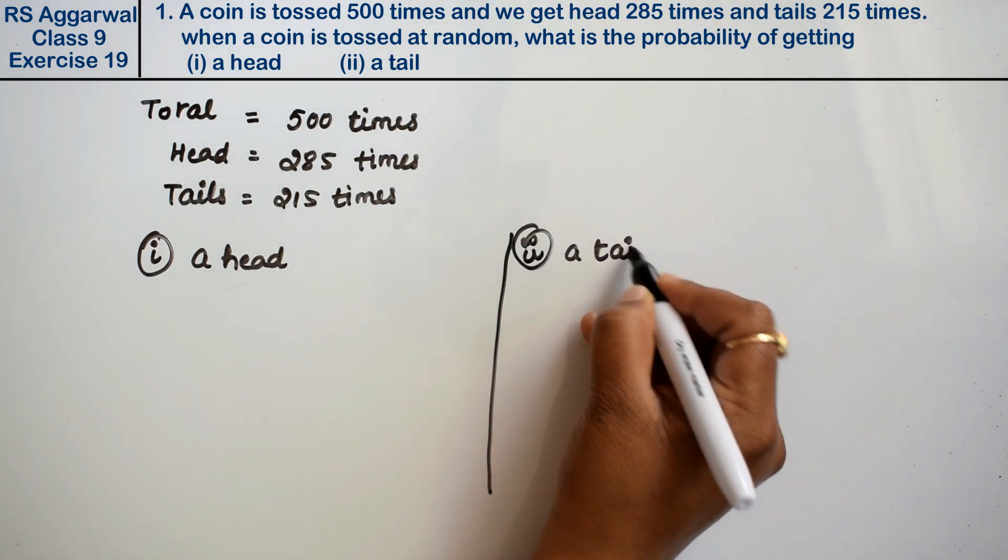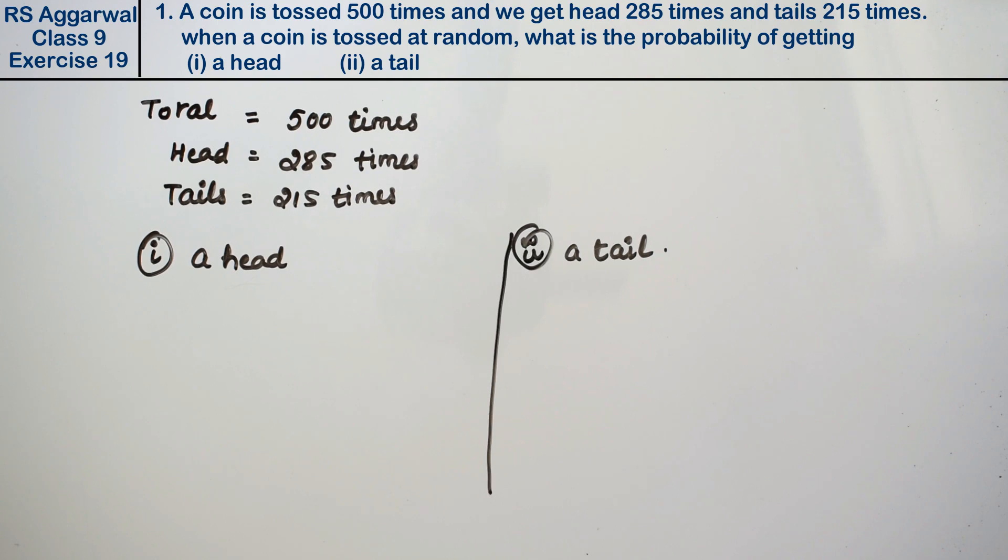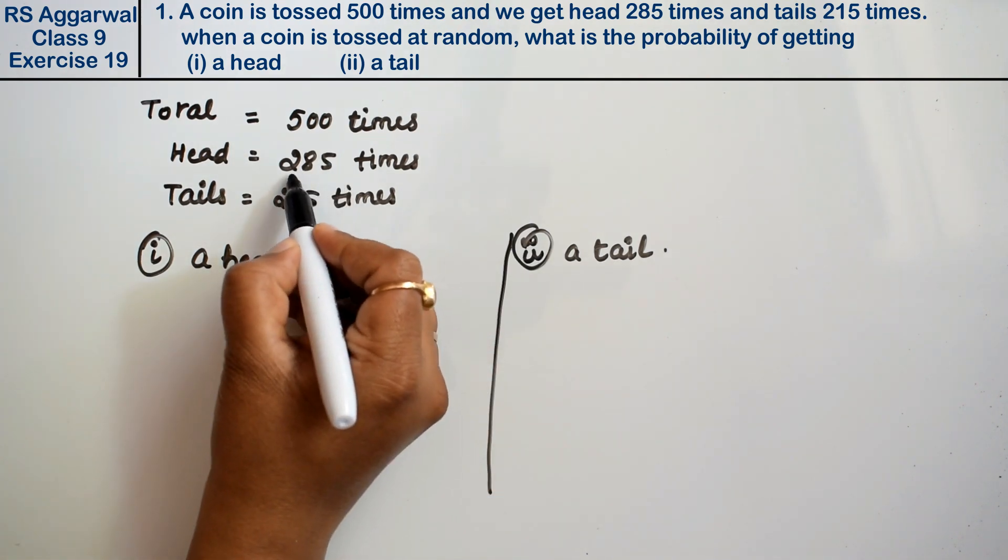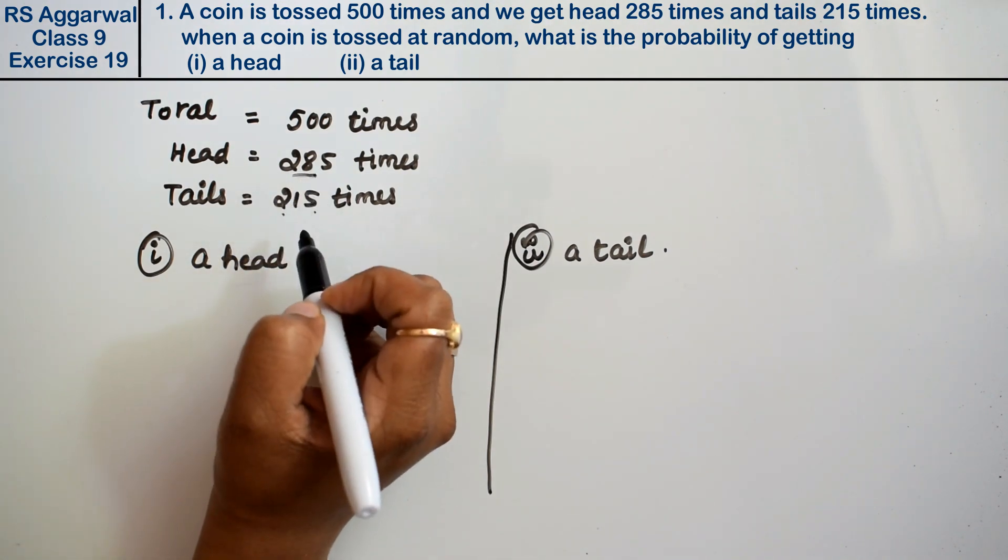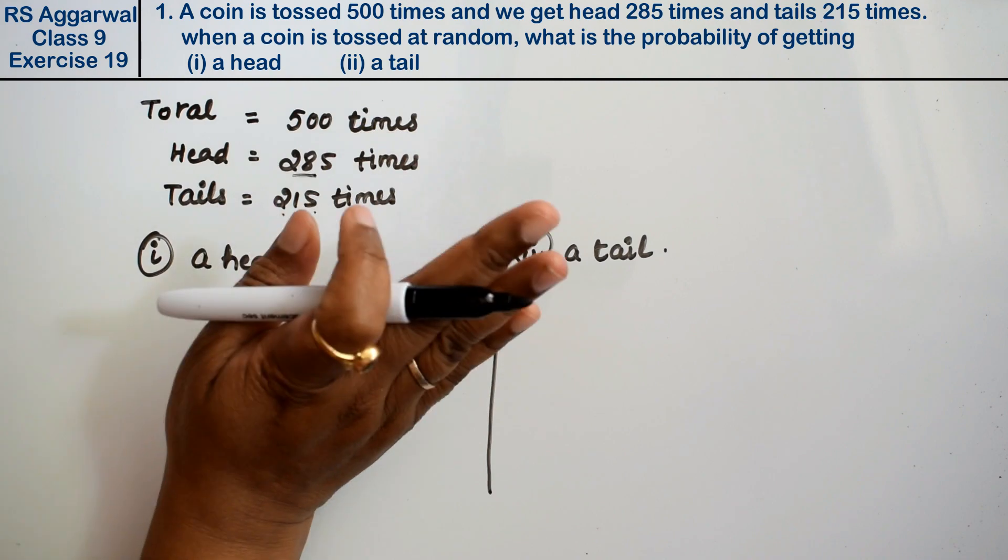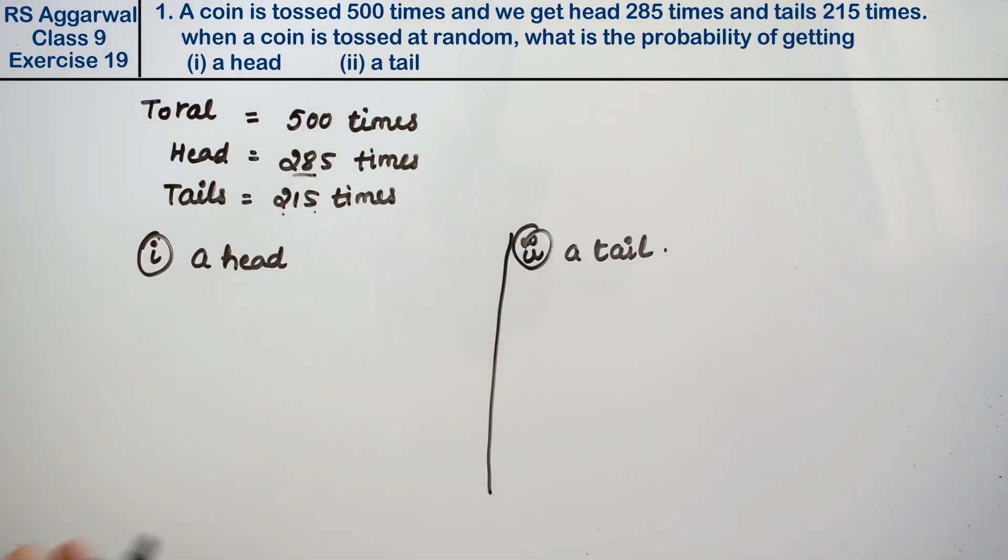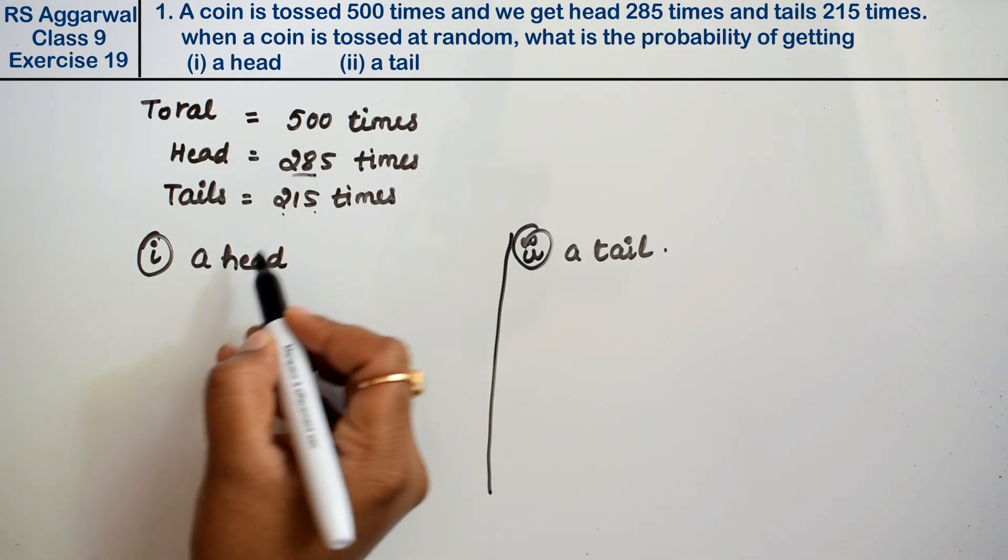We need to find both probabilities. We know a coin has two sides: head and tail. If we toss a coin 500 times, we got 285 heads and 215 tails. This is what's specified, but next time if we toss 500 times, how many heads or tails will come? For this we use probability.